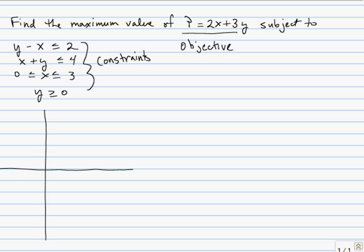So graphing y minus x is less than or equal to 2, we could plot the intercepts of 0, 2 and negative 2, 0. The shading here would occur towards the ordered pair 0, 0 because it is a solution to that first inequality. So this is y minus x equals 2.